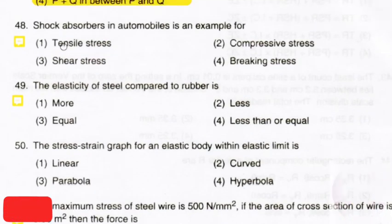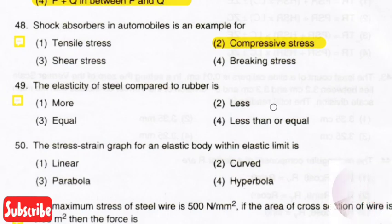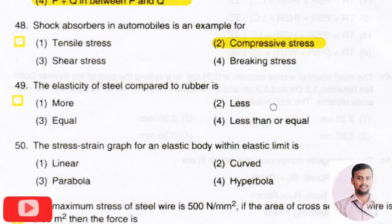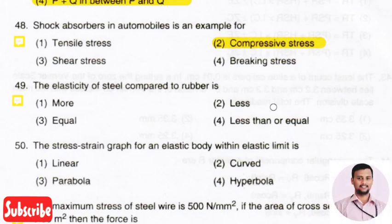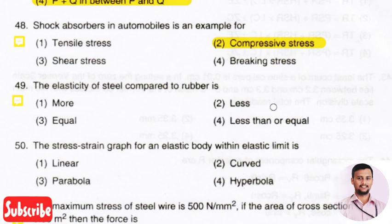The next question: shock absorbers in an automobile are an example of? The right answer is option 2, that is compressive stress. Shock absorbers are mechanical or hydraulic components that absorb shocks and vibrations produced while vehicles are moving. During movement, these shock absorbers compress into tubes, and at that condition compressive stresses are developed. So shock absorbers are the best example for compressive stress.